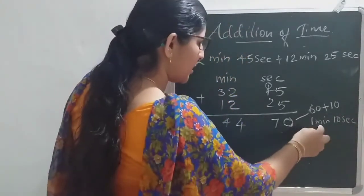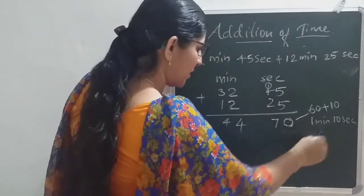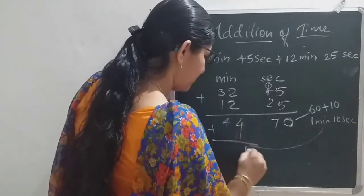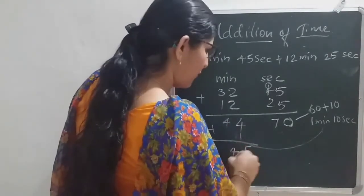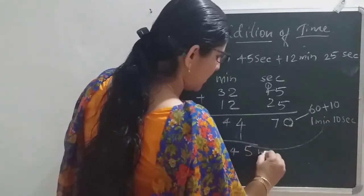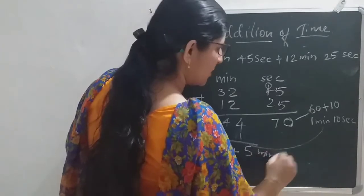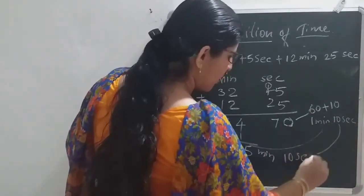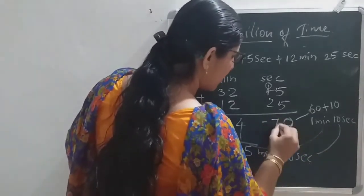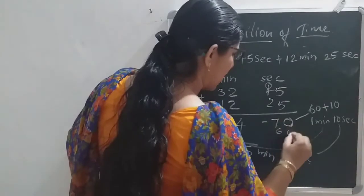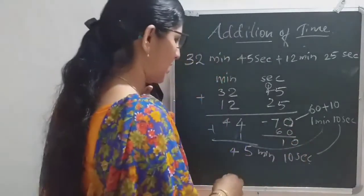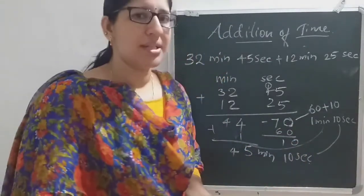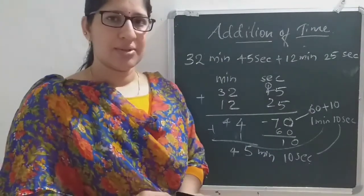That 1 minute you add here. So 44 plus 1 is 45 minutes, and the remaining 10 seconds. So the answer is 45 minutes and 10 seconds. You can also do it by subtracting 60 from 70 to get 10, and then adding 1 to the minutes — either way the answer will be correct: 45 minutes and 10 seconds.